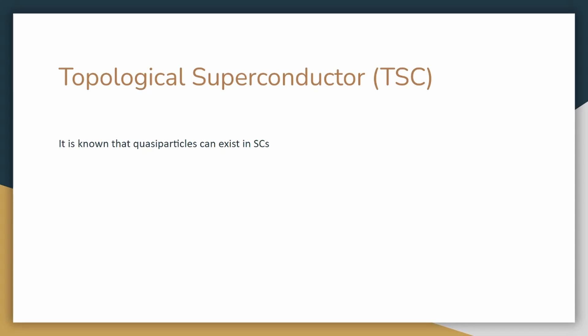As it turns out, quasiparticles can exist in superconductors. They are not real particles like electrons, but we can mathematically treat them as particles to predict their behavior.